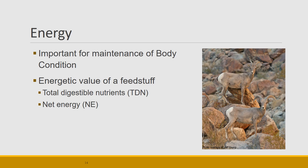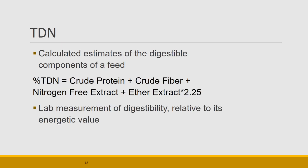Energy values of feedstuffs are determined in two ways: total digestible nutrients (TDN) and net energy. TDN is calculated as the digestible portion of the feed — what is in the feed that is able to serve as energy. The formula is: TDN = percent crude protein + percent crude fiber + percent nitrogen-free extract + (percent ether extract × 2.25). The lab measurements focus on digestibility and relative energetic value.